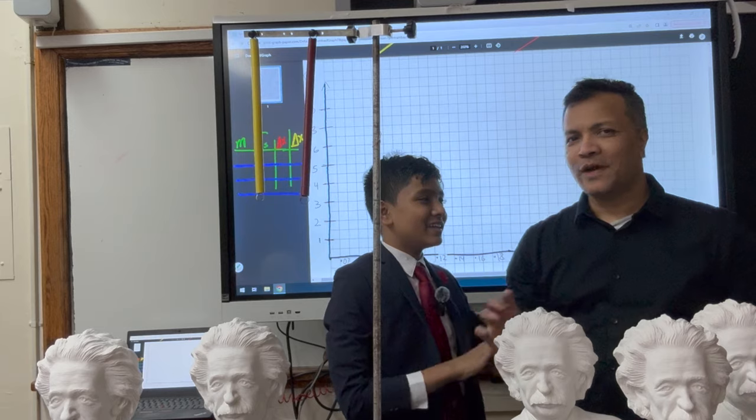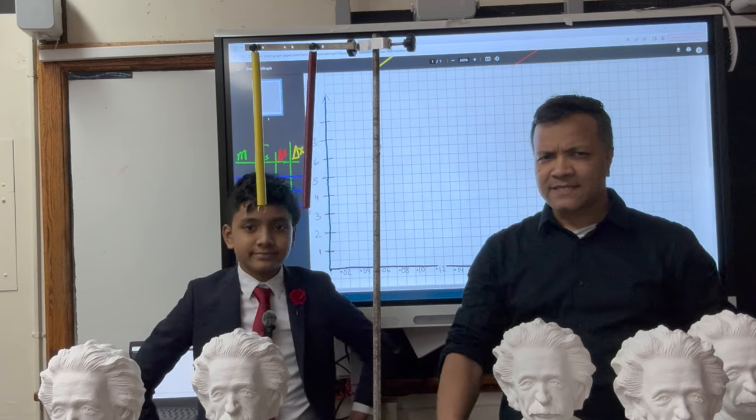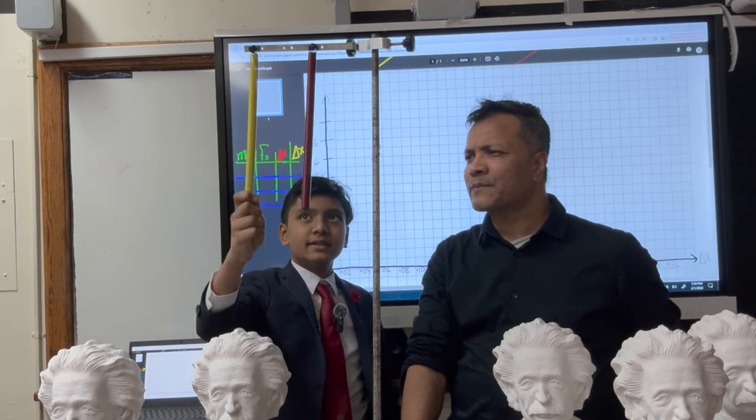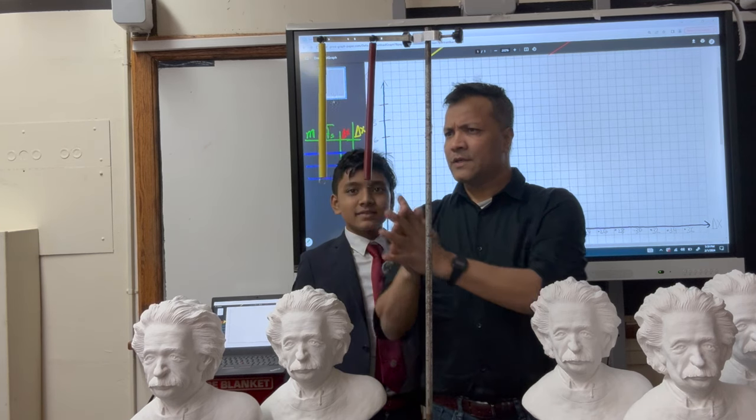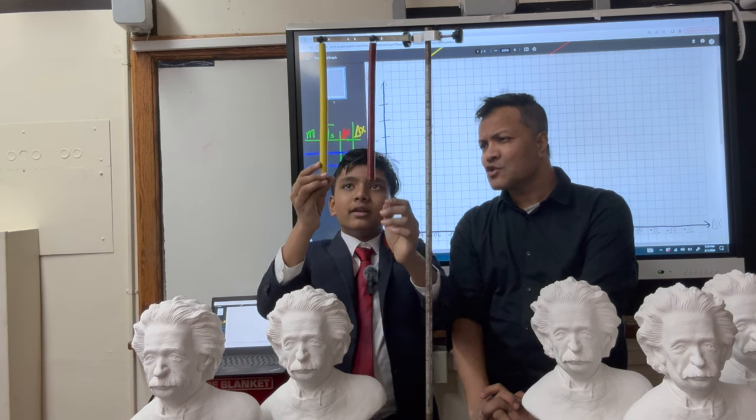Today we're going to be doing Hooke's Law. We have two springs. We'll try to understand K. What is K? K is the spring constant, which represents how stiff a spring is, or how much it responds to external force. Our main goal is to find out K. If you can tell, the yellow one is very slightly thicker than the red one.